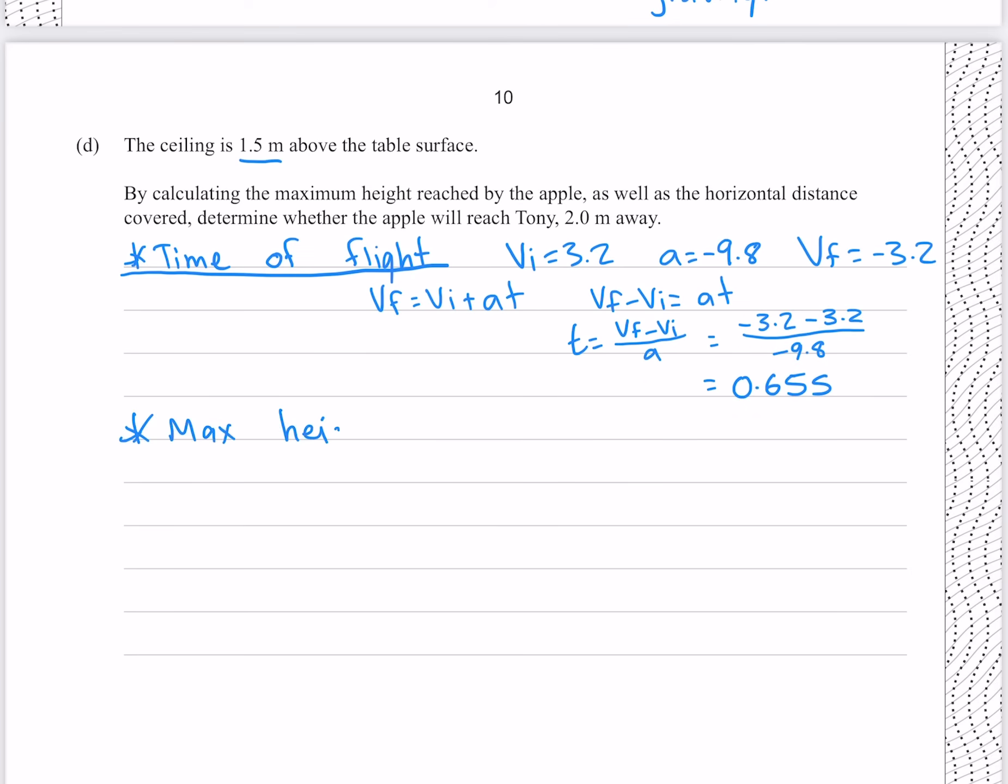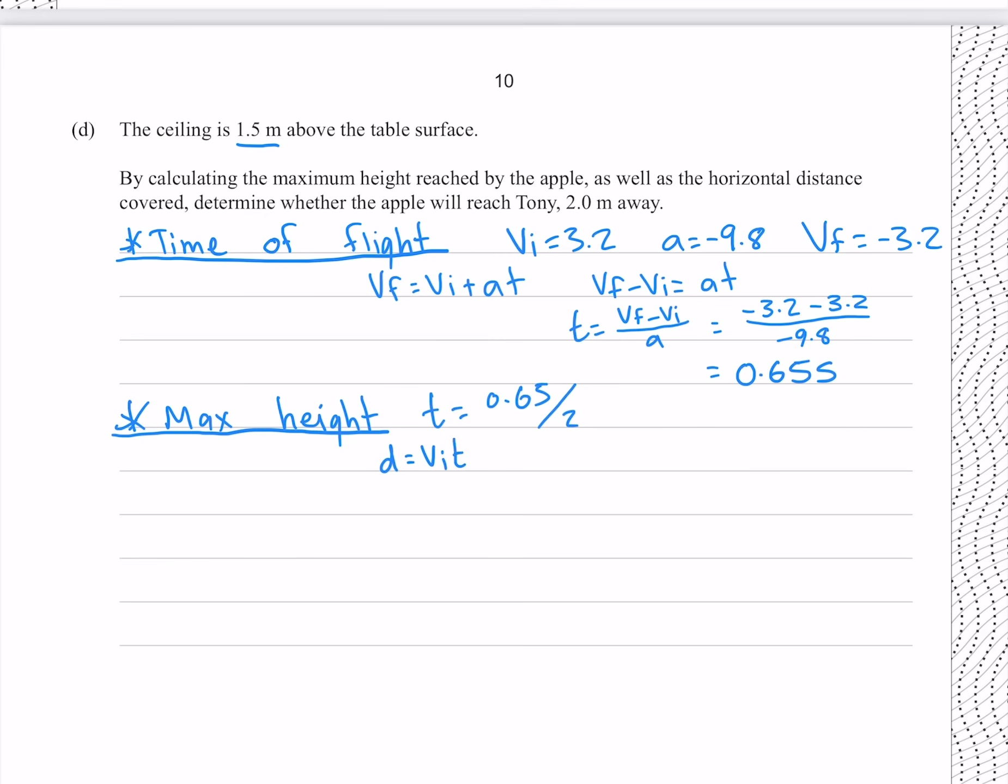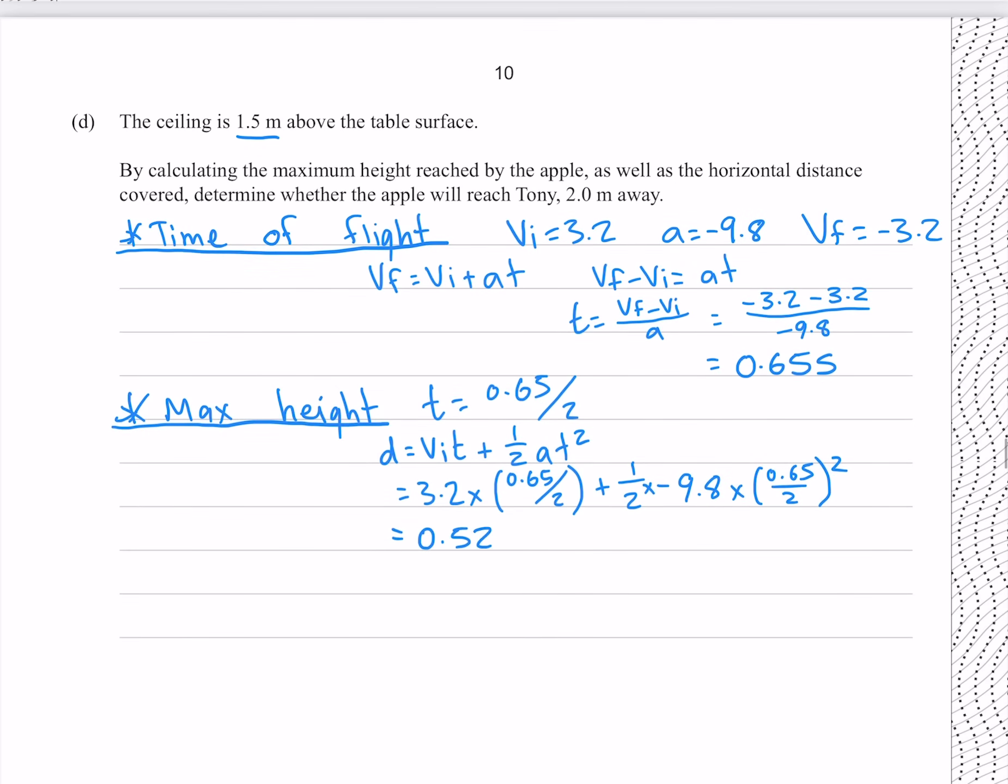And now to find our maximum height, where we know our time is going to be 0.65 divided by 2, since our apple will reach its maximum height halfway through the journey. We can use any of the equations that contain distance. I'm going to use D equals VIT plus half AT squared, putting our numbers in, gives me 0.52 meters to two significant figures, which means that our height is fine, it is not going to hit the ceiling.